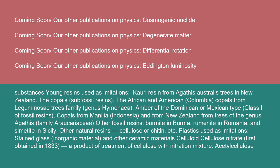Imitation: Substances and young resins used as imitations include kauri resin from Agathis trees in Australia and New Zealand, the copal subfossil resins, the African and American (Colombia) copals from Leguminosae trees of the genus Hymenaea, amber of the Dominican or Mexican type (class I of fossil resins), and copals from Manila, Indonesia, and from New Zealand from trees of the genus Agathis, family Araucariaceae. Other fossil resins include Burmite in Burma, Rumanite in Romania, and Simetite in Sicily.